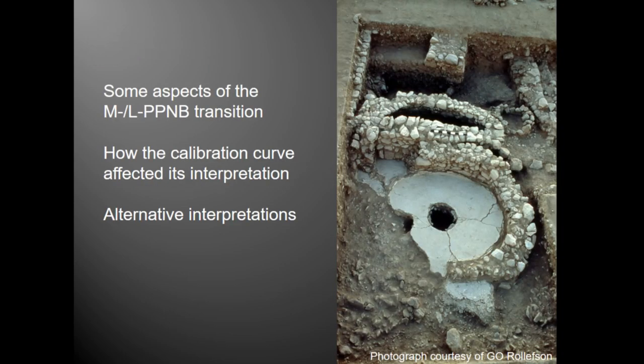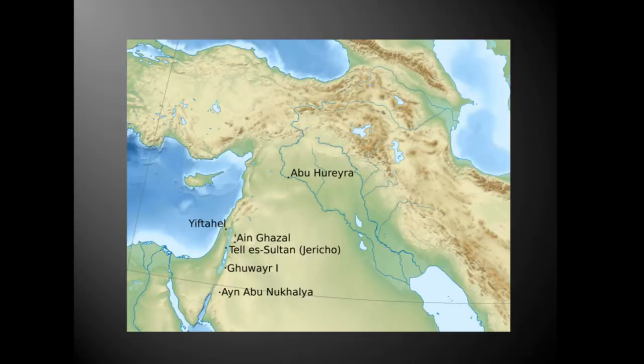I'd like to look at this from the perspective of the middle-to-late PPNB transition in southwest Asia. I'll kick off with a brief review of what's happening in southwest Asia in the earlier Holocene, then move on to how the shape of the radiocarbon calibration curve might actually be affecting some of our perceptions of this transition, and what happens once we start unpacking it.